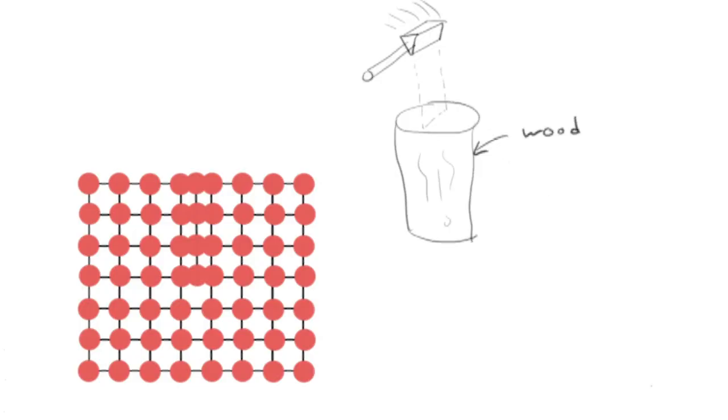Now, if you've ever done that, you might know that what happens is the sharp edge of the axe hits the surface of the wood. And it creates a crack.